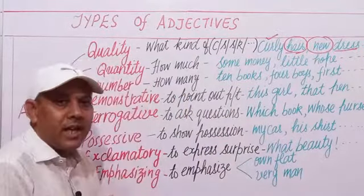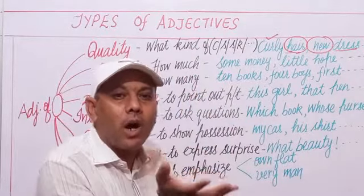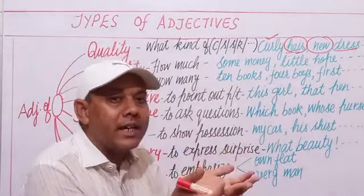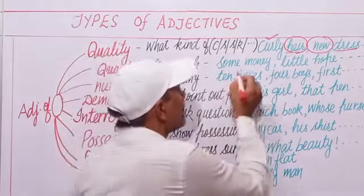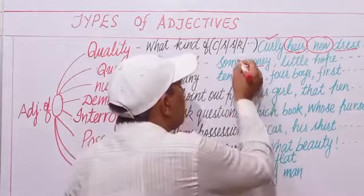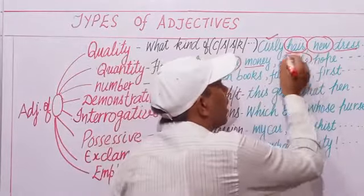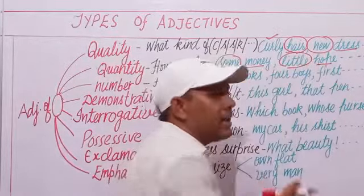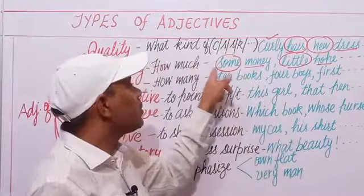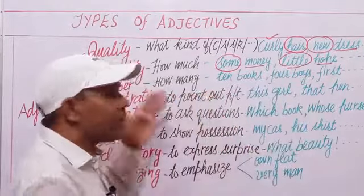Adjectives of quantity tell us how much of something — they are used for uncountable nouns. For example, 'some money' — 'some' is an adjective of quantity. 'A little hope' — 'hope' and 'money' are uncountable nouns, and these adjectives define their quantity.